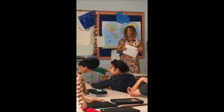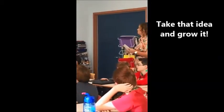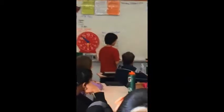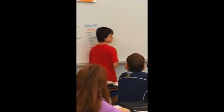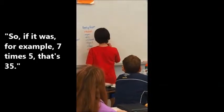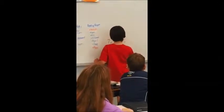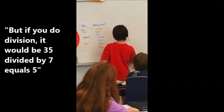Brian, do you want to try that? Explain what was being said — take that idea and grow it. This class is awesome at building on each other's ideas. It's like Lego blocks — you keep building a bigger and better idea. So, if it was 7 times 5, that's 35. But it could also be 35 divided by 7 and it would equal 5.